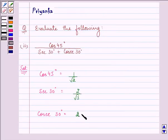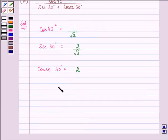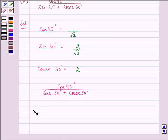So it is equal to 2. Now let us substitute its values. We have cos 45° upon sec 30° plus cosec 30°. So it is equal to 1/√2 divided by 2/√3 plus 2.